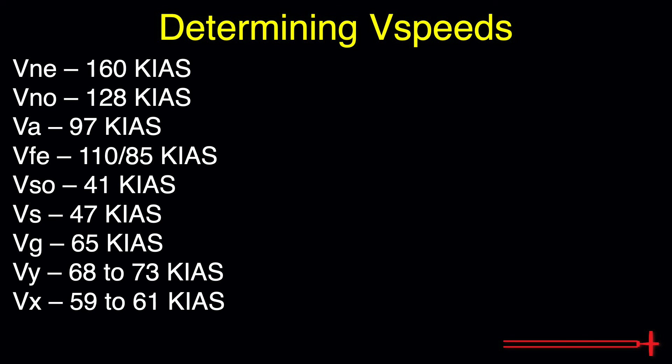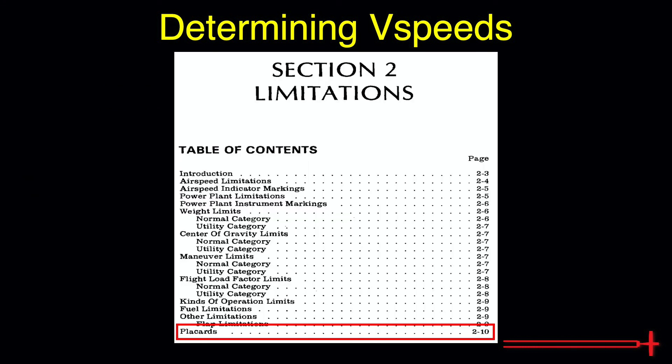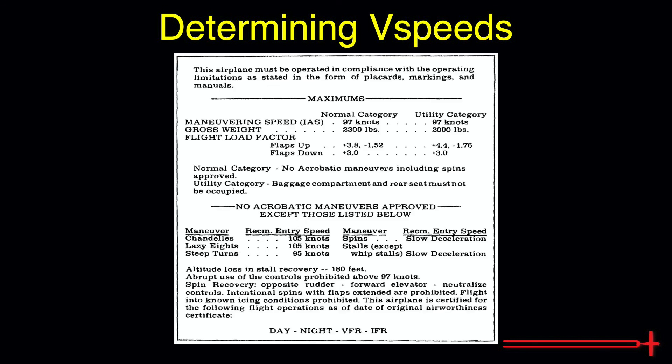These are the V-speeds for a 1978 Cessna 172 November model. The V-speeds should be memorized for the specific aircraft you plan to perform flight training in. As a small bonus, in section 2 of the Skyhawk POH under the placard section, one can find recommended entry speeds for some of the maneuvers. This concludes today's video covering how to find airspeed limitations, otherwise known as V-speeds, for the Cessna 172.